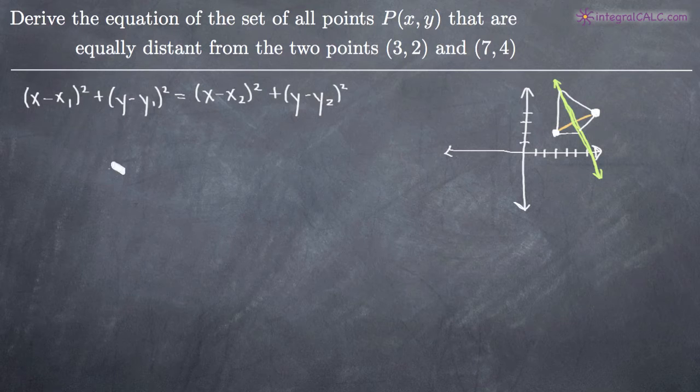Which means that all we need to do is find the equation of this green line here. And the way that we do that is with this formula. Let's take this first point to be x₁, y₁ and we'll take this second point to be x₂, y₂.